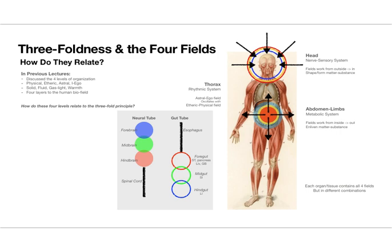The fourfold layers of organization — the four fields — relate to the threefold principles. In the head zone, the fluid body, gas-light body, and warmth body are working in a formative way from the outside in, forming essentially solid structures. In the intestines, the forces work from inside out into the body, into metabolism and will activities in the psyche. So that's how these relate in the two poles.